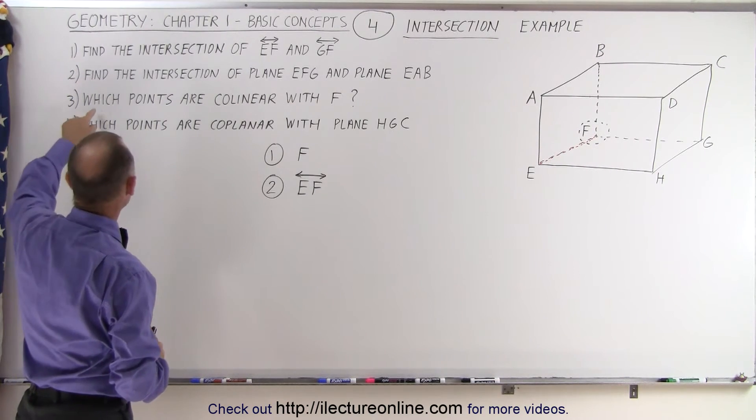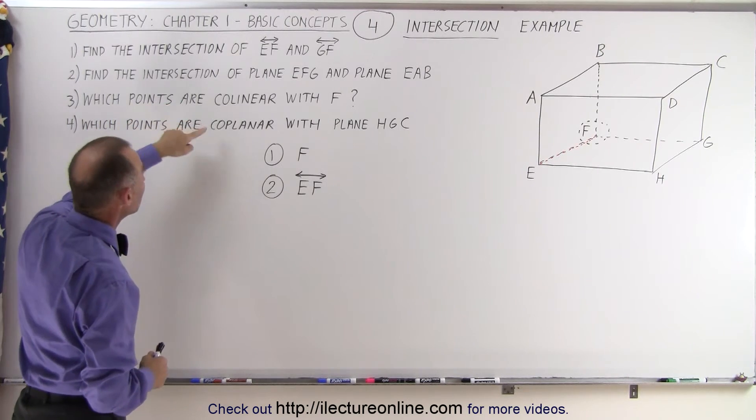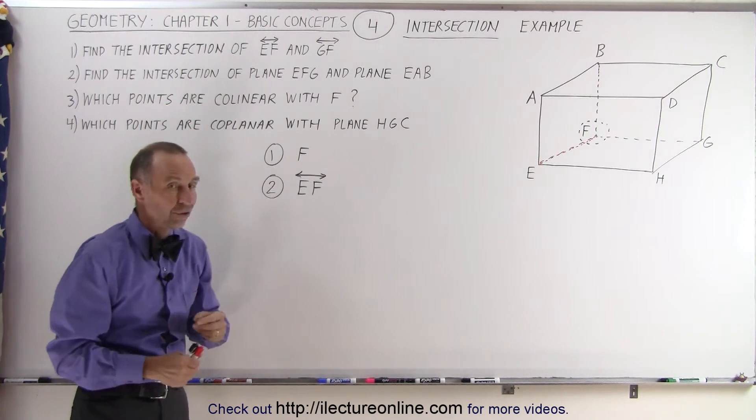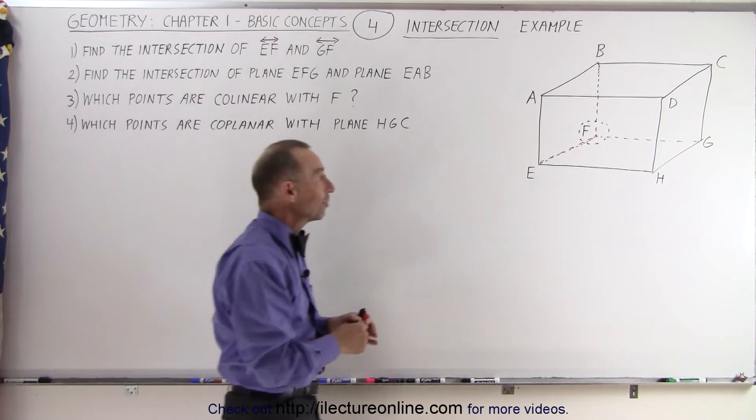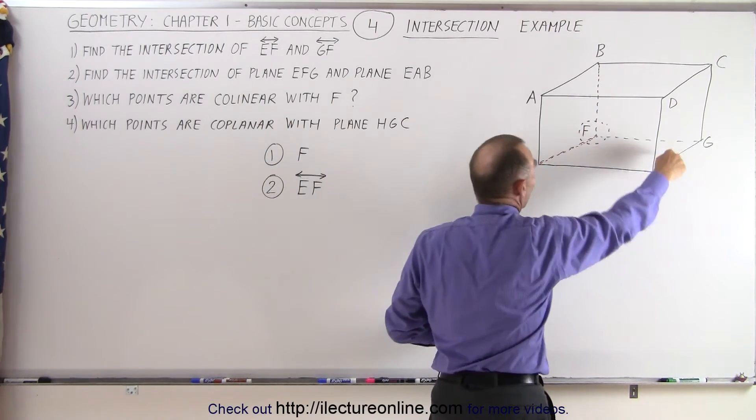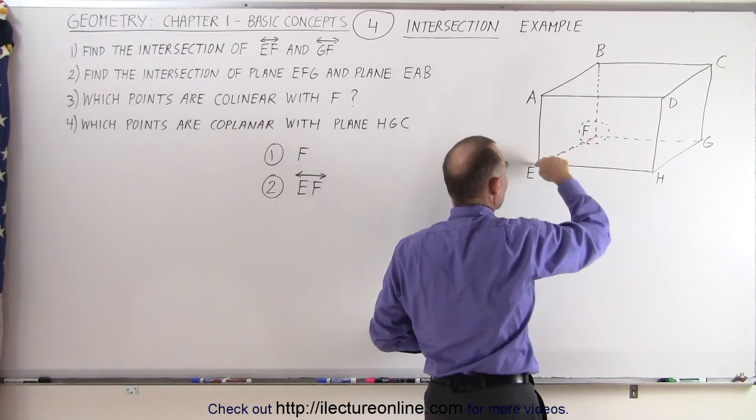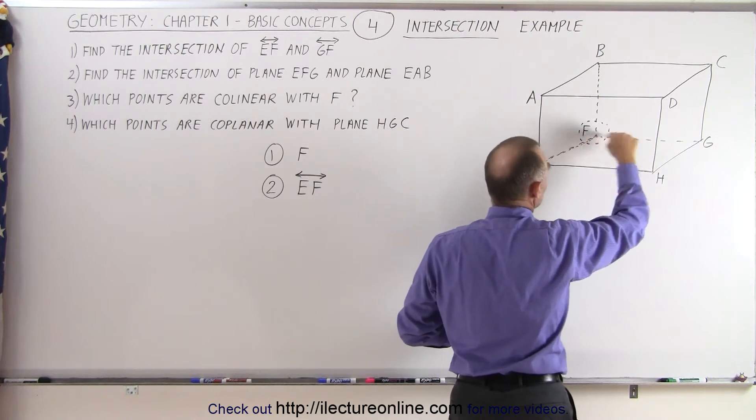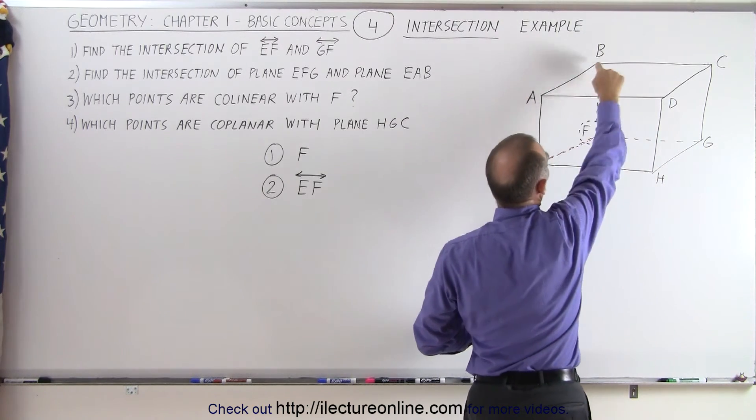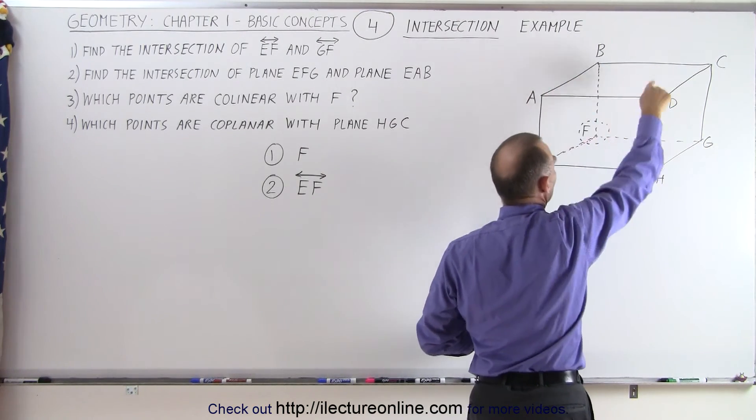The third question: which points are collinear with F? So now if we define that we have the lines defined by all the edges of the box, we have here a line, there a line, so we have the bottom one, two, three, four lines. We have four lines at the top, and we have four vertical lines.